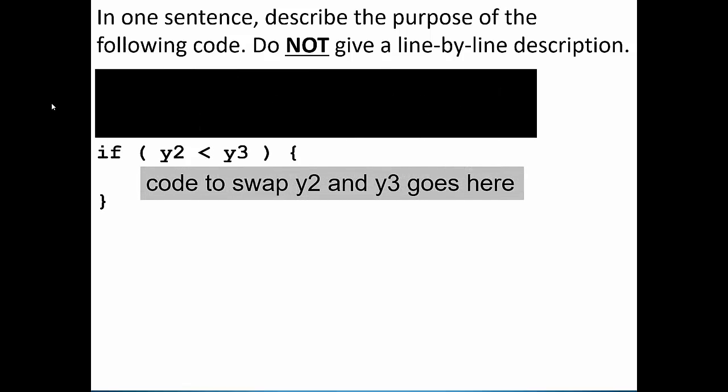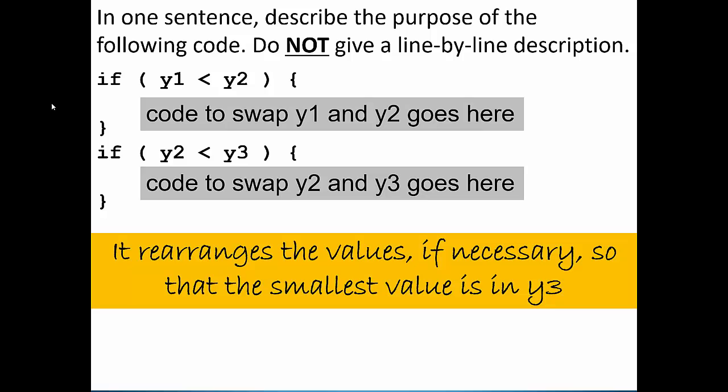Then I give you this piece of code, which is the same as before but now instead of Y1 and Y2, it's the variables Y2 and Y3. Your explanation for both pieces of code: it rearranges the values if necessary so that the smallest value is in Y3. The smallest value, wherever it was in those three variables to start with, has bubbled its way to be in Y3.